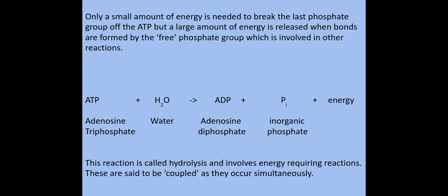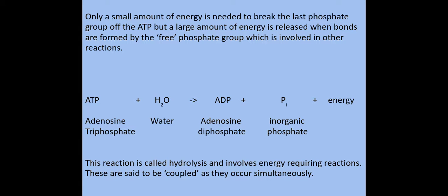ATP can be broken down into ADP. ATP stands for adenosine triphosphate, whereas when it's broken down and a phosphate is removed, I get adenosine diphosphate — di meaning 2. Here I've added water in a hydrolysis reaction to remove a phosphate group and create ADP.